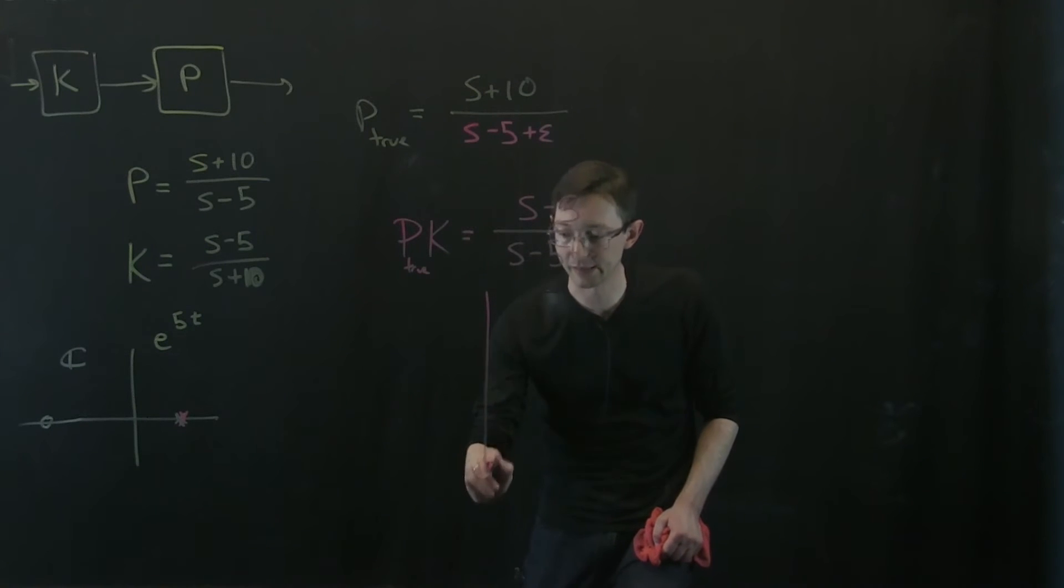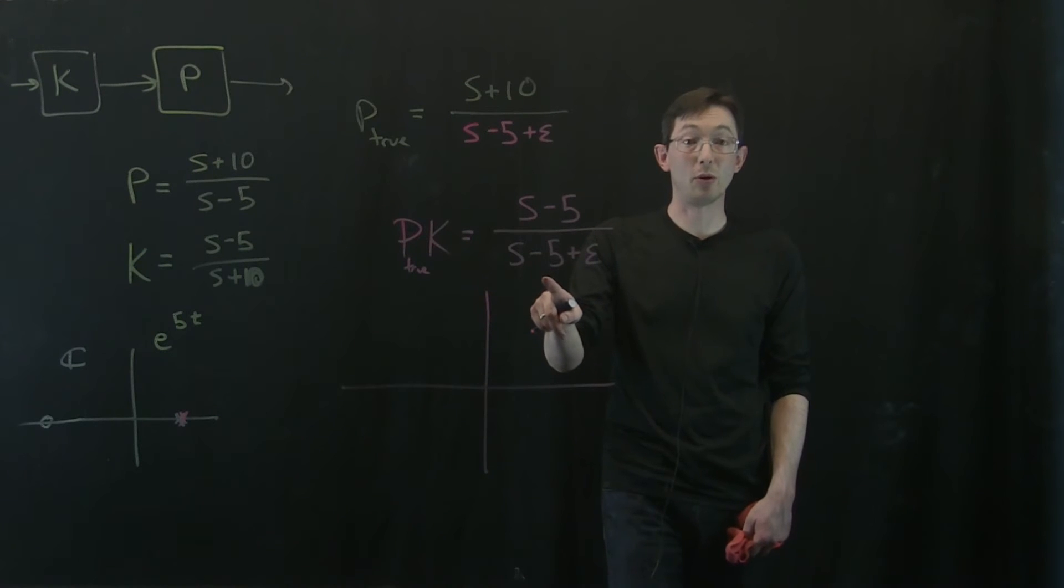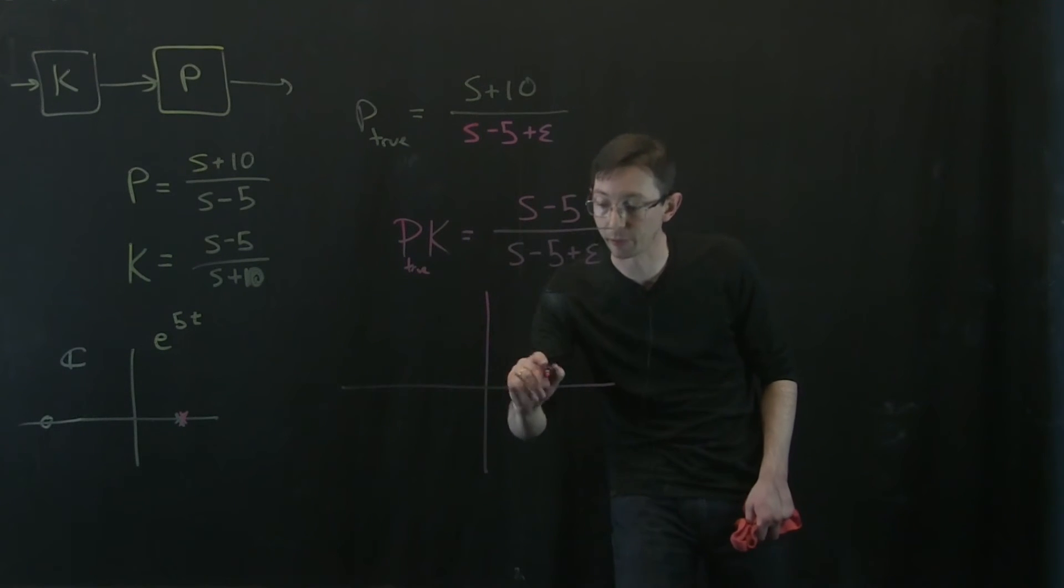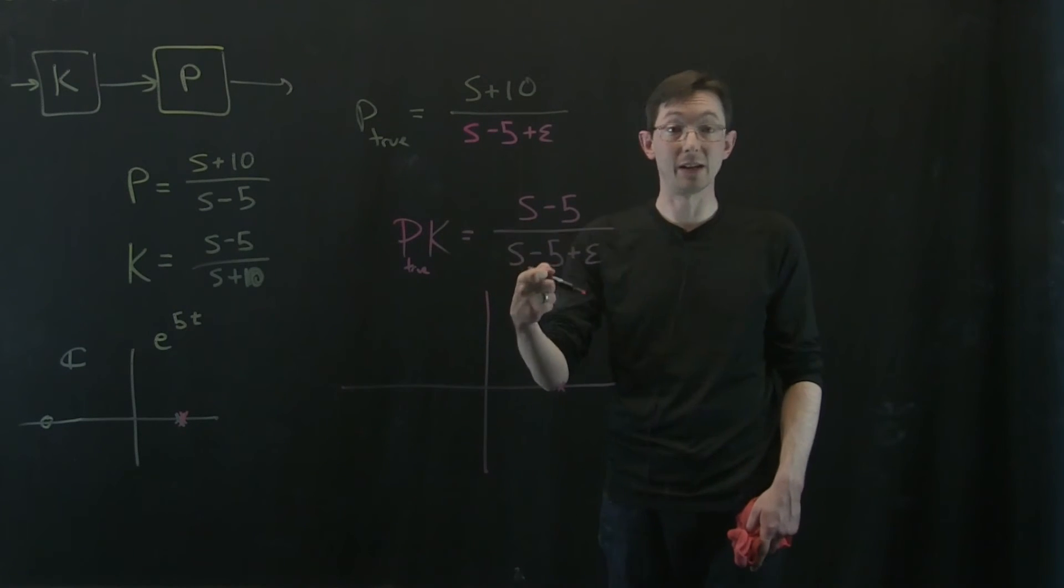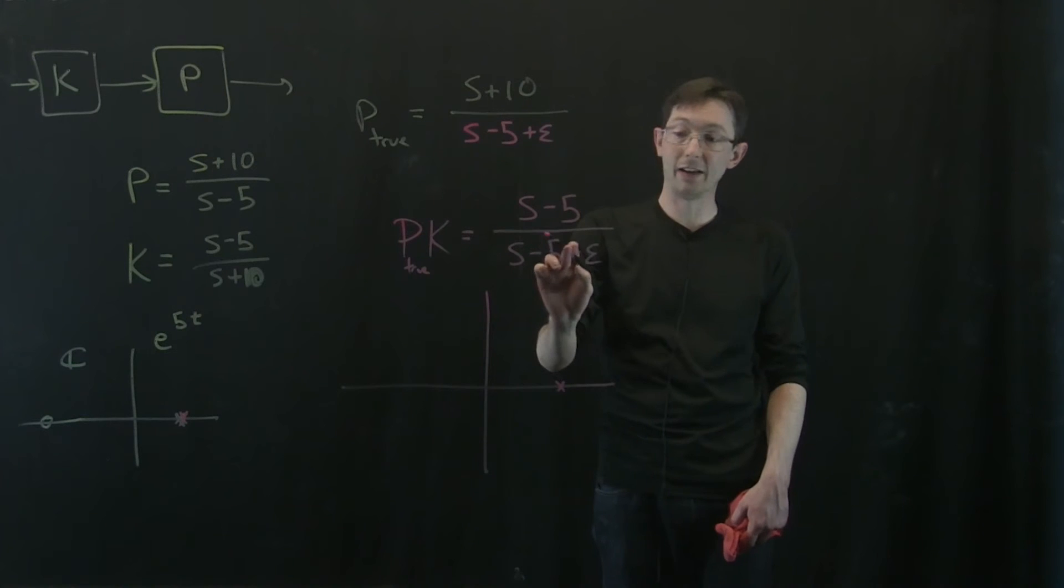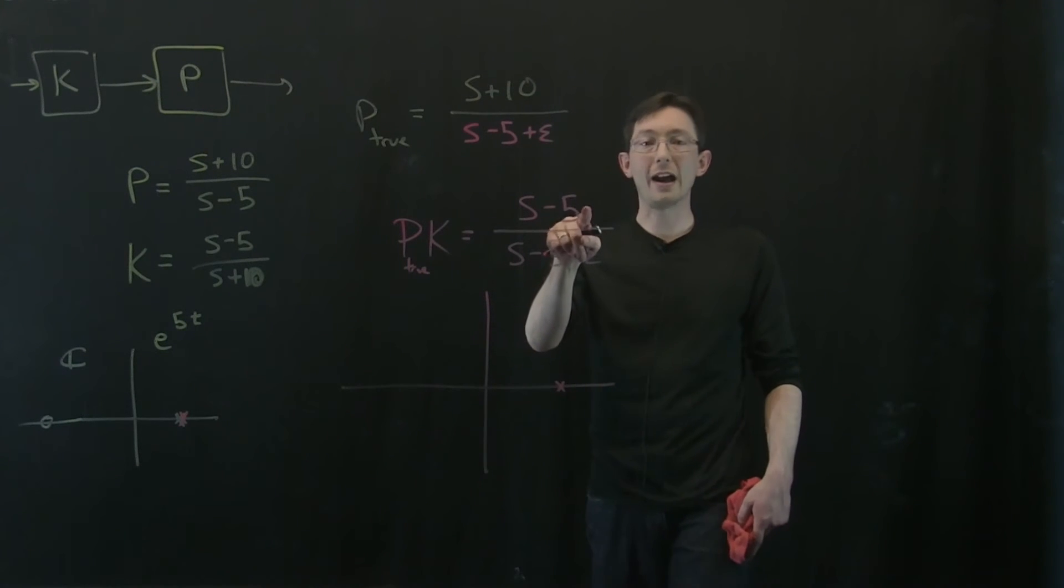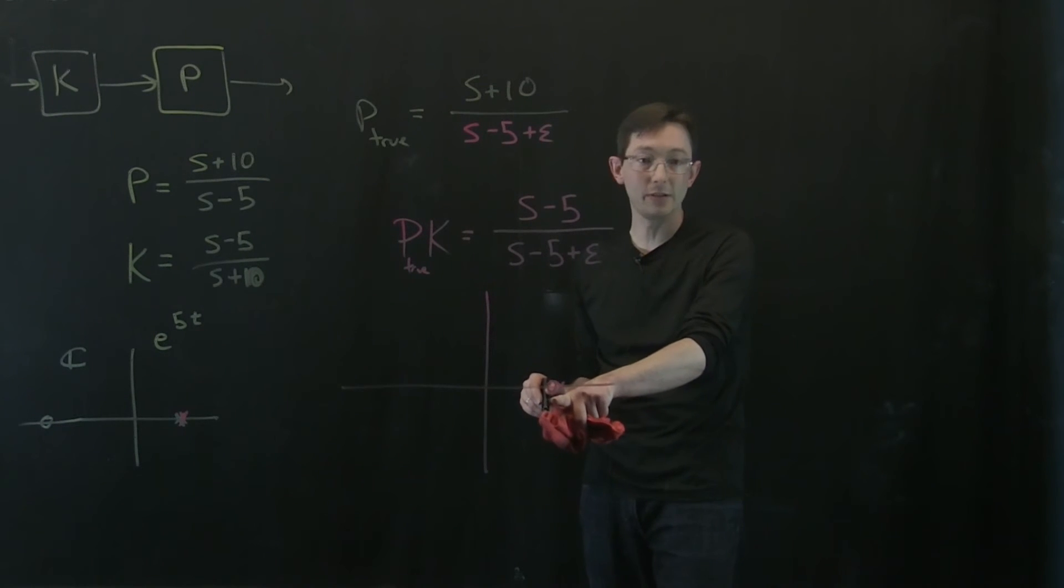Now I have a system where essentially I still have a pole very close to S equals 5. So I still have a pole here. The system is still actually unstable. There's this unstable exponential growth at e to the 5 minus epsilon T. But now I also have a zero at S equals 5, really really close here.